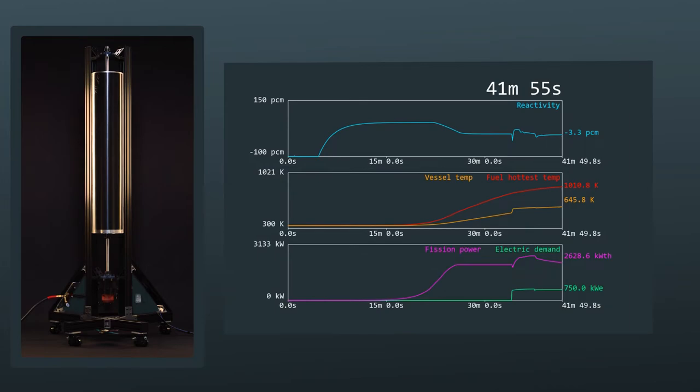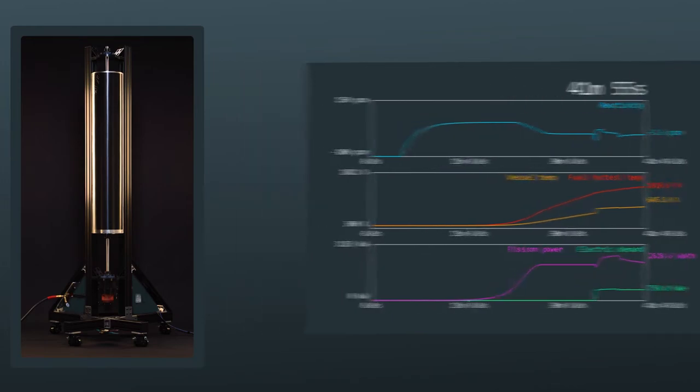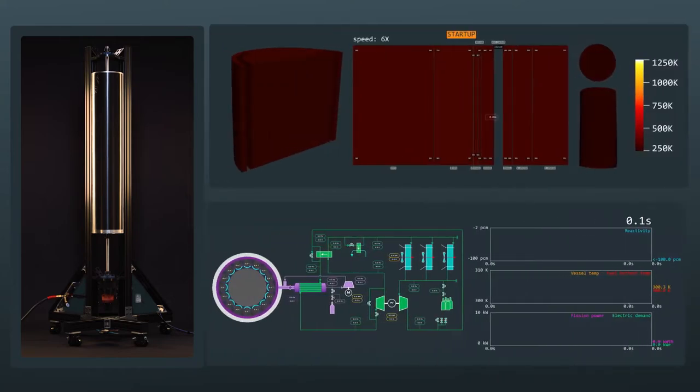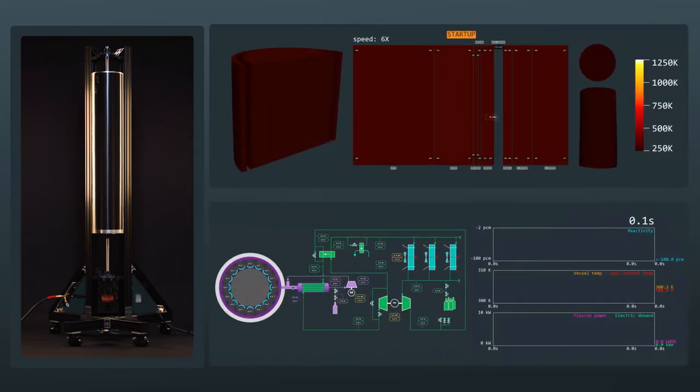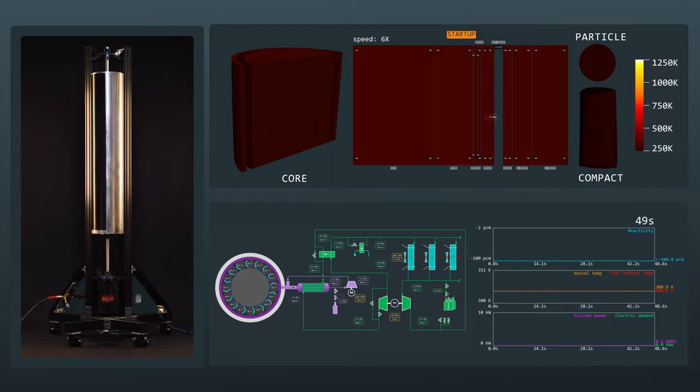SimEngine will now demonstrate integrated execution of the reactor digital twin with its real-time control system as it goes through a startup. Drums are rotated to insert reactivity until criticality is achieved. At this point, the neutron population starts growing exponentially. When the core starts to heat up due to the release of fission energy,